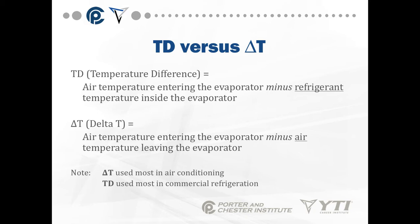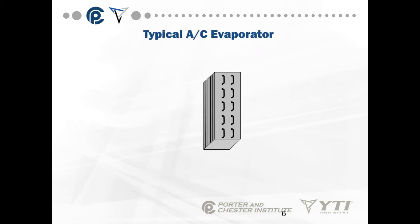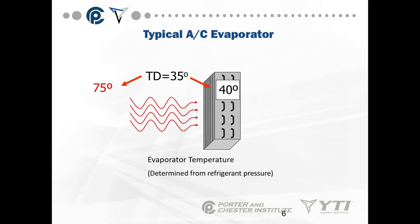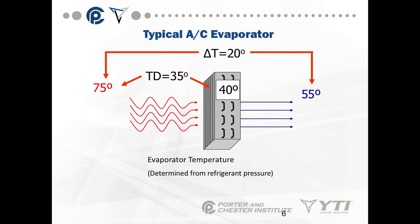Don't get the two confused, because technical support and technical documents will sometimes list both of these. Delta T is most often used in air conditioning; temperature difference is most used in commercial refrigeration. For a typical AC evaporator: air coming in at 75°F, refrigerant boiling point at 40°F, temperature difference is 35°F. The air leaving has been cooled from 75°F to 55°F, so delta T is 20°F.